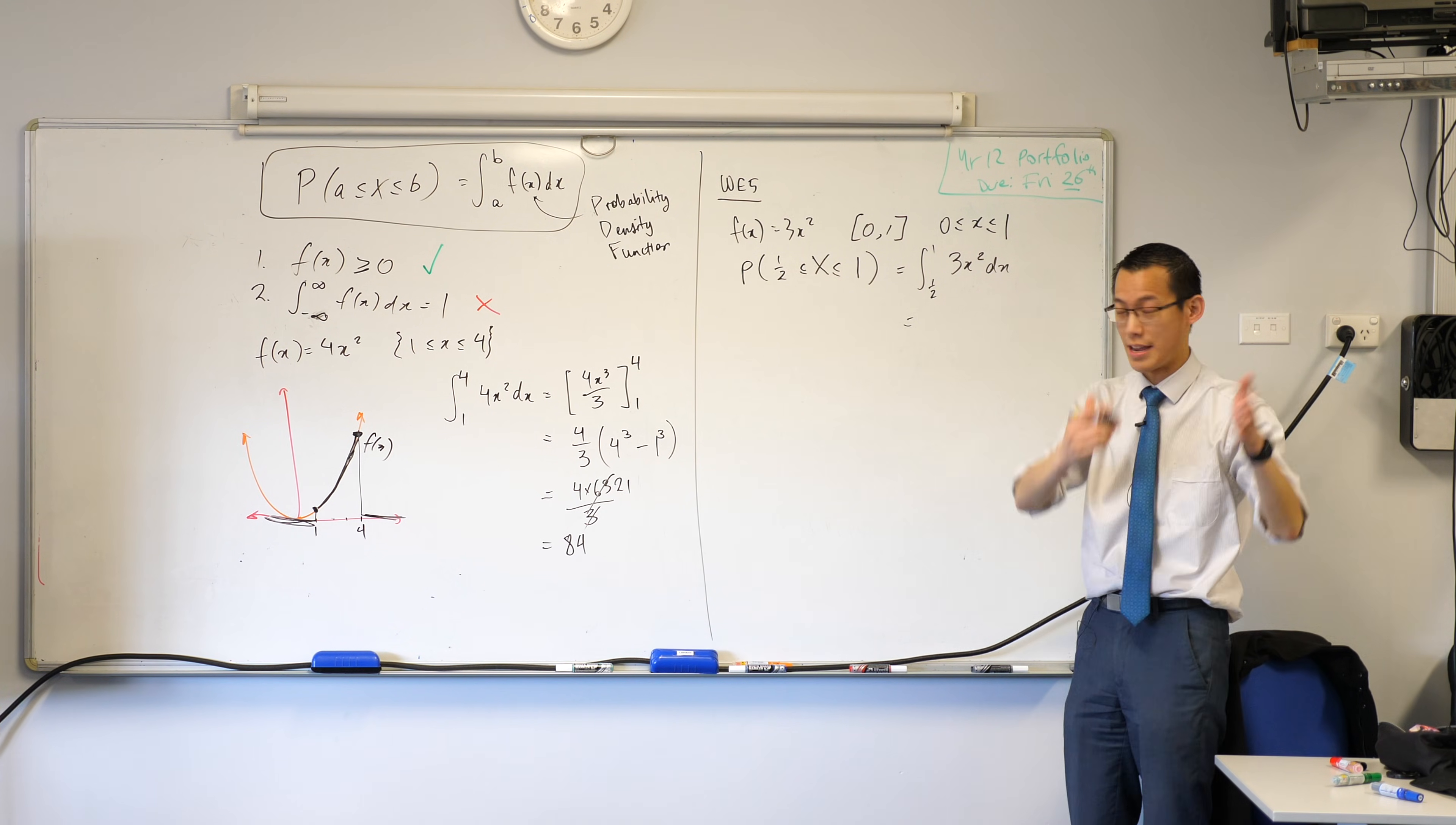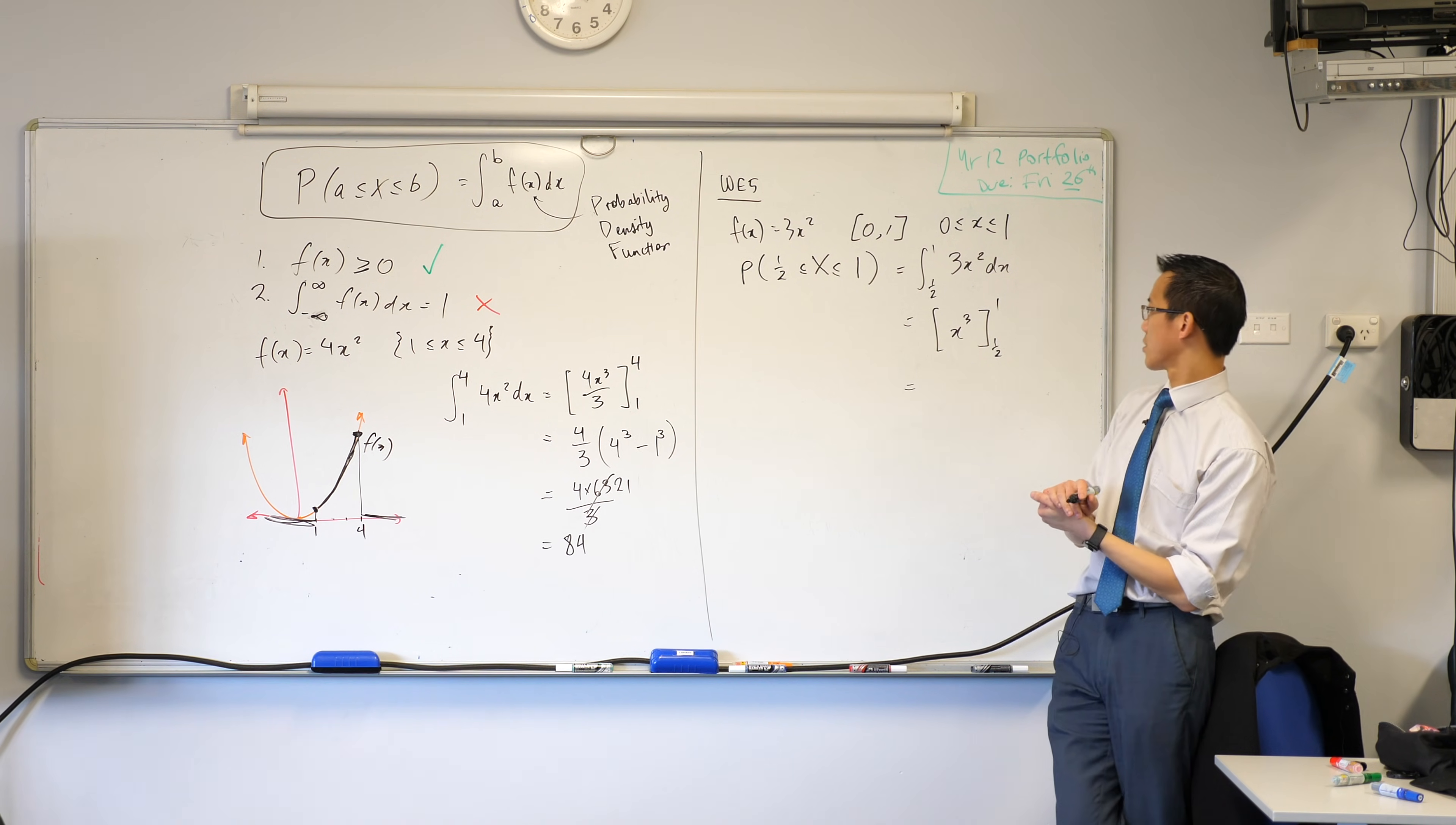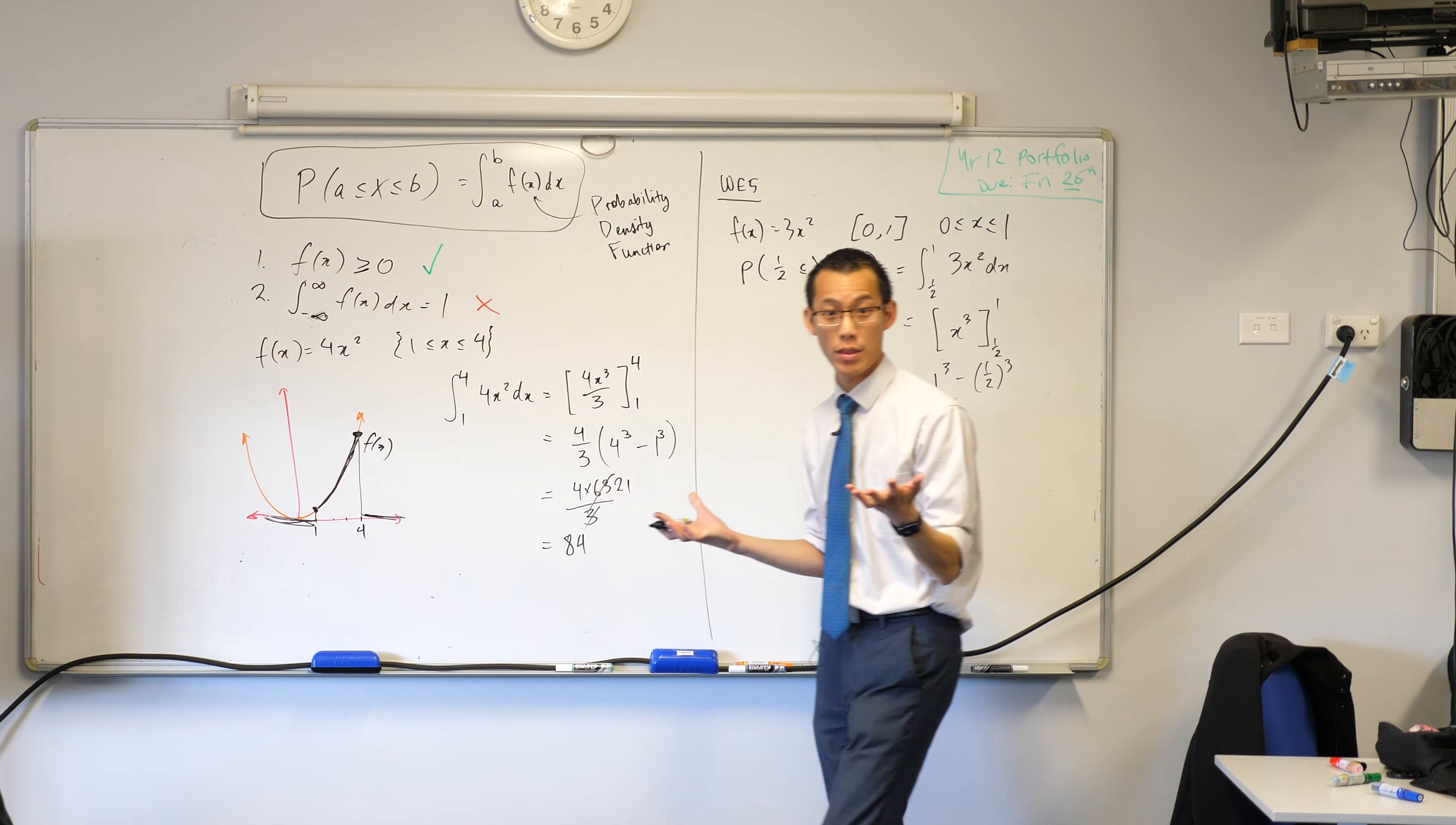And then you're like okay I mean I'm in calculus mode now so you can tell me the primitive of 3x squared it's going to be x cubed. Fantastic. Evaluate that from half to 1. Let's see here so 1 cubed take away a half cubed, 1 take away 1 over 8, so this is 7 eighths. Happy with that?